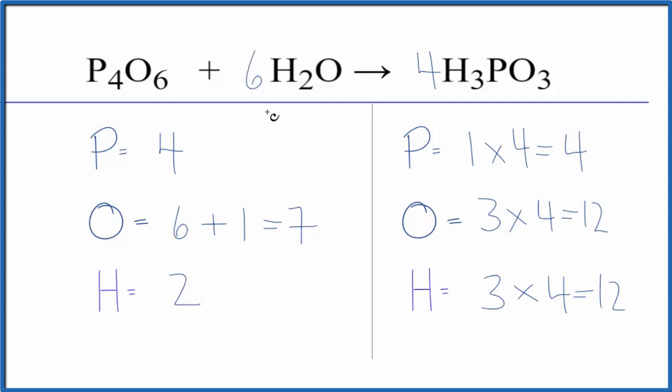So we need to put a six as our coefficient here. Two times six, that would give us 12. Let's update the oxygen atoms here. Now we have six here, plus one times six, that gives us 12. And this equation is balanced.